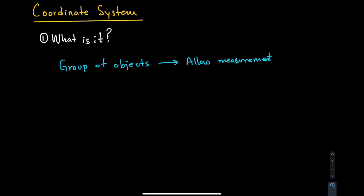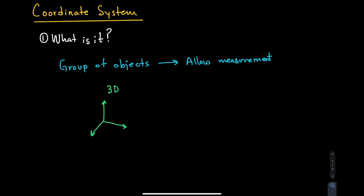In engineering, this group of objects is commonly a group of vectors. Specifically, for three-dimensional space we use three vectors, and for two-dimensional space we use two vectors.